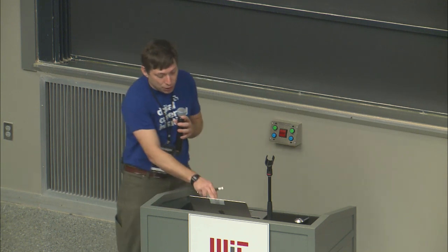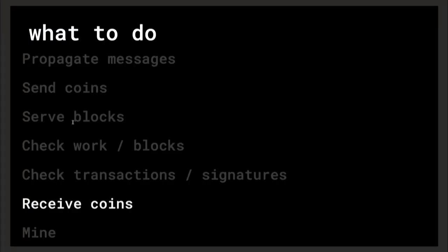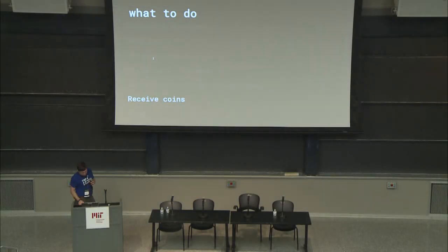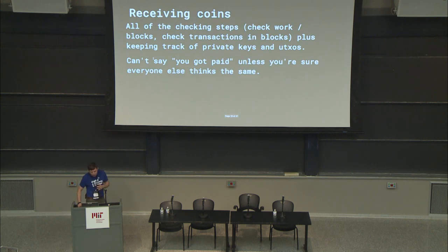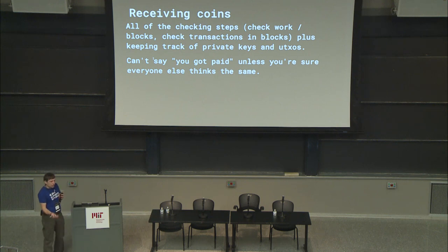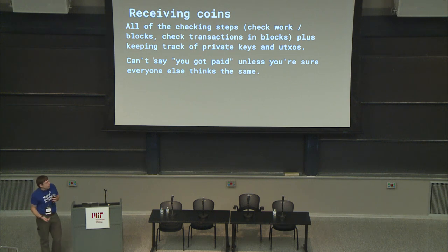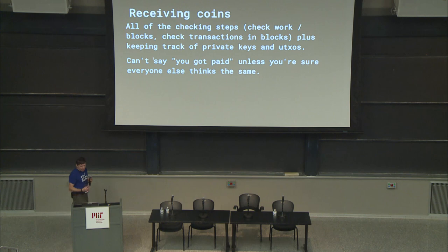Receiving coins: if you want to receive a coin, you basically have to do all of those things above it. You have to check the work to get the right consensus, check all the transactions to make sure there's nothing weird going on. You have to propagate messages, receive them, check the blocks — because you don't want to say you've gotten paid until you're sure that everyone else agrees that this person has gotten paid.